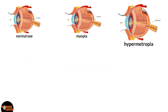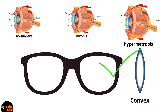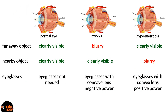Next is hypermetropia or farsightedness — the opposite of myopia. For such a person, far away objects are clear but nearby objects are blurred. They need to correct their vision with eyeglasses that use convex lenses. A convex lens has positive power, so the prescription for a hypermetropic person will have positive power. With this table, you can remember all these concepts clearly.